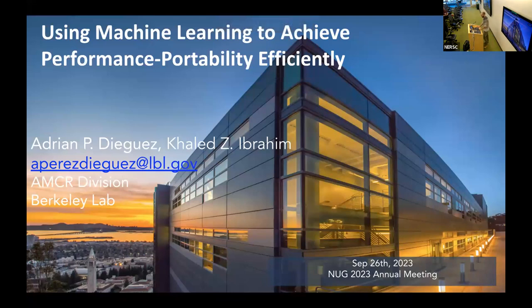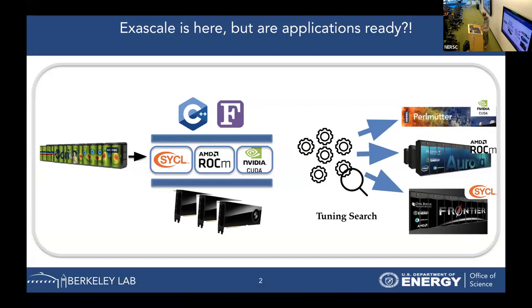Let's see how we use machine learning for getting performance portability. Traditional HPC codes were relying on OpenMP or MPI to be executed on distributed memory supercomputers, like Cori.